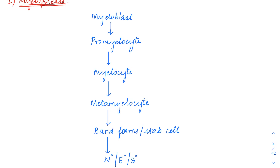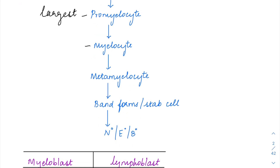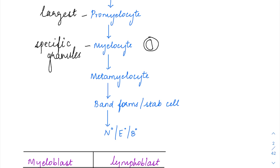The myeloblasts are the precursor cells. The promyelocyte, the second stage, is going to be the largest cell in this series. Then in the myelocytes, you are going to have the specific granules. The specific granules start with myelocytes and the cells are going to appear with a D-shaped nucleus — the nucleus is pushed to one side.